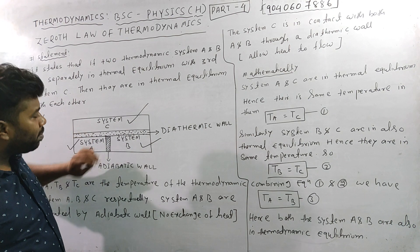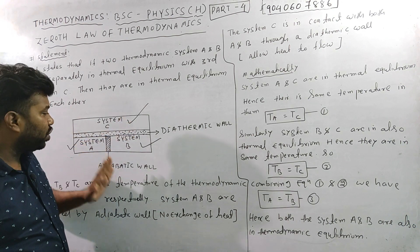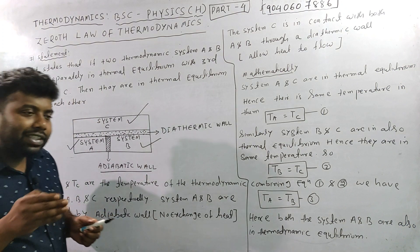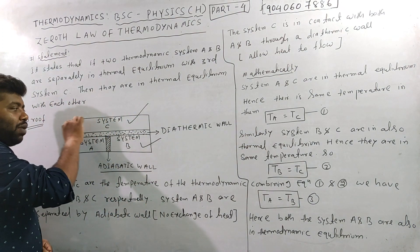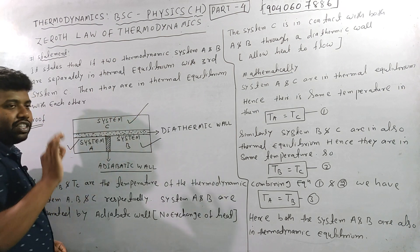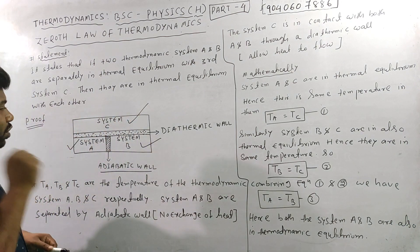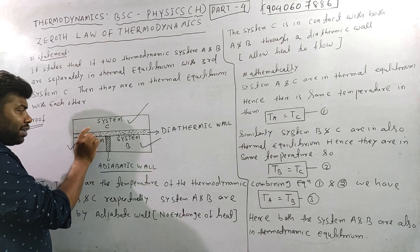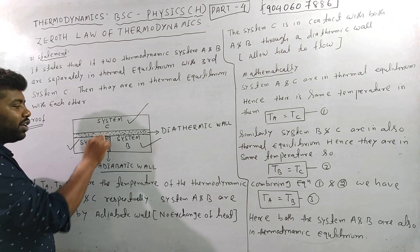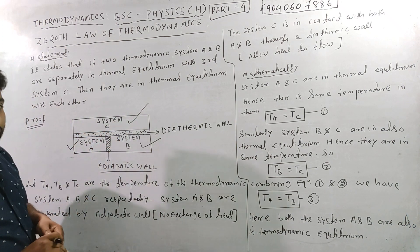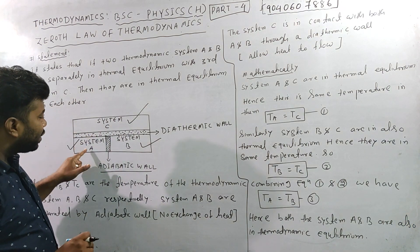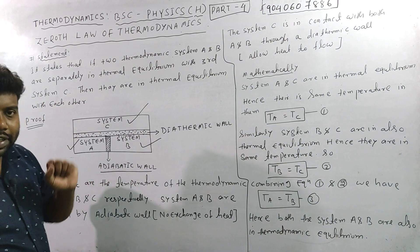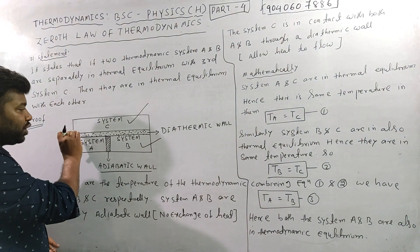We have system C. System C is in contact with both A and B through a diathermic wall, which allows heat to flow. System C is in thermal equilibrium with system A, and system C is also in thermal equilibrium with system B.